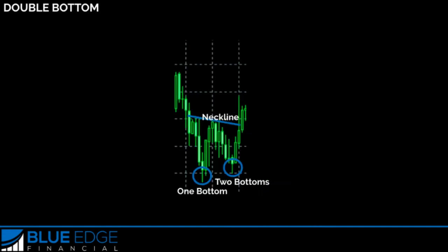So then we have what's called the double bottom pattern, which is also a trend reversal formation but it's found at the bottom of a downtrend instead. So we'd be looking to go long or to buy. You can see we have a previous downtrend here, and then we have one bottom and two bottoms where price couldn't break through, which gives us a confirmation of a reversal that's now going to go upwards.